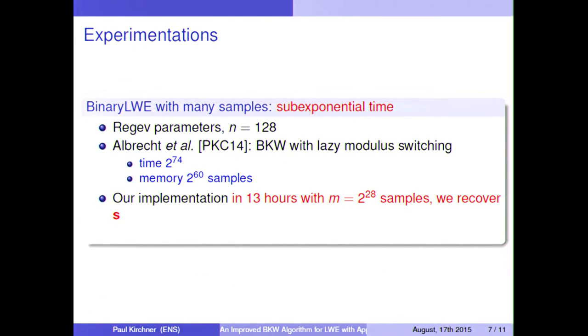We have implemented the algorithm for binary LWE with many samples. And so for dimension 128, the previous result was we need time around 2 to the 74, but we run it in 13 hours with much less samples. And even if it's asymptotically fast, in practice lattice reduction is much faster for this kind of parameters.